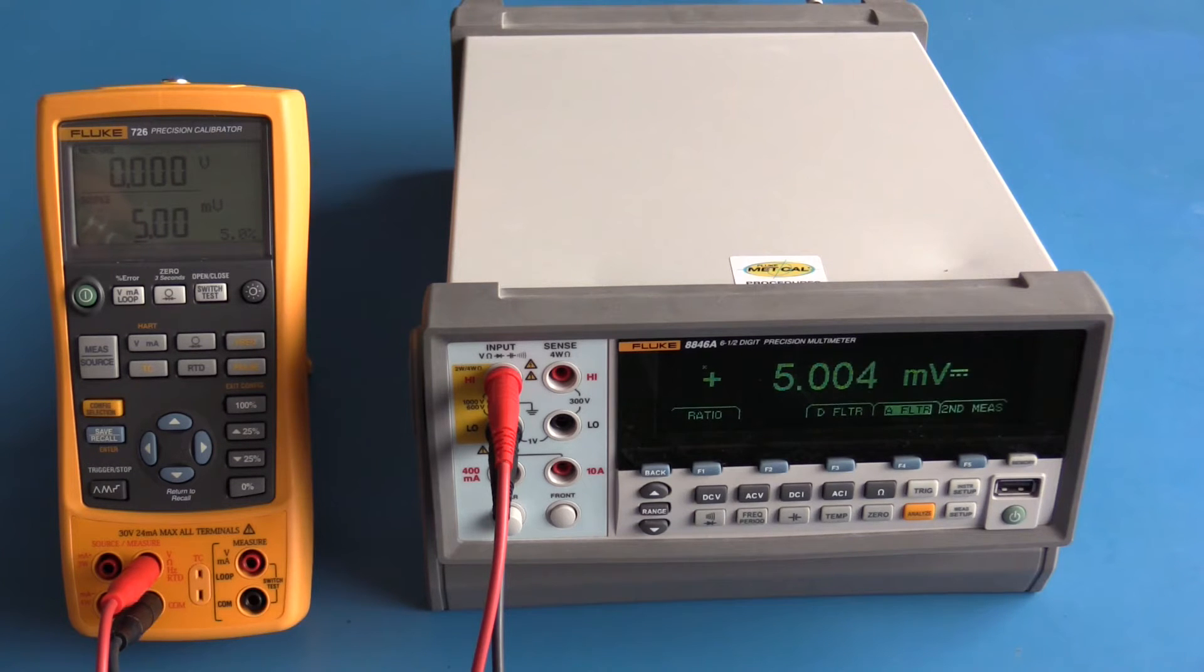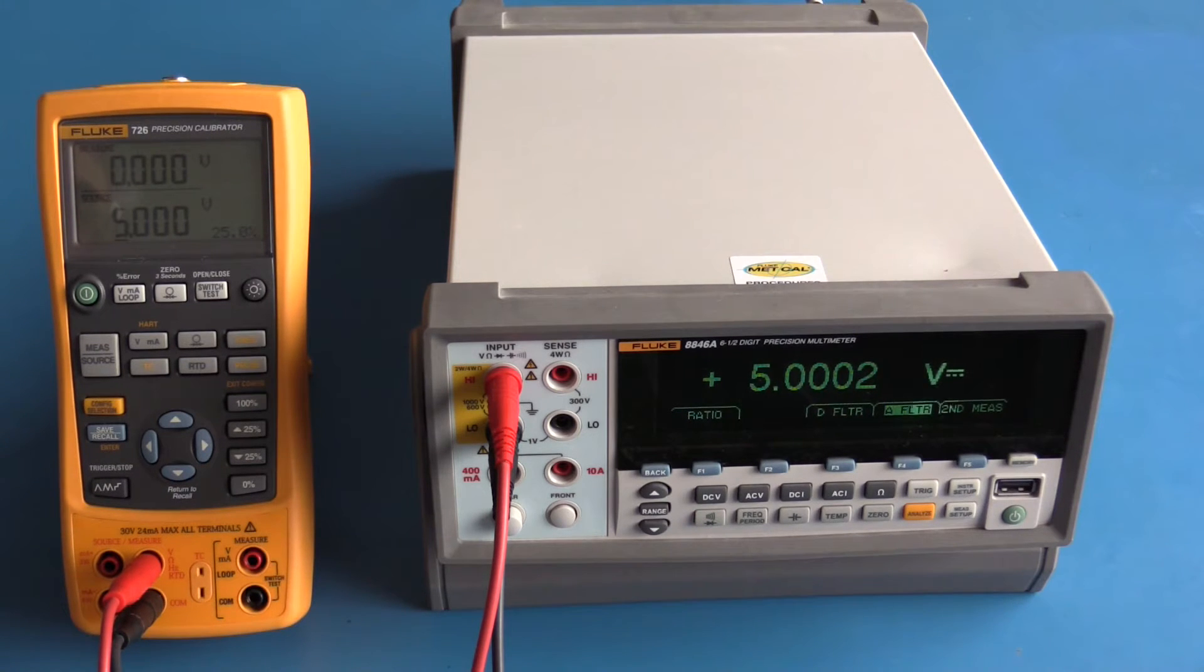I have now changed the Fluke 726 to source five volts and the Fluke 8846a is showing five volts. The Fluke 726, although it's a precision process calibrator, does not have the precision of the Fluke 8846a. We can see that the meters are in close agreement to each other, so this gives me a good level of confidence in my meters.